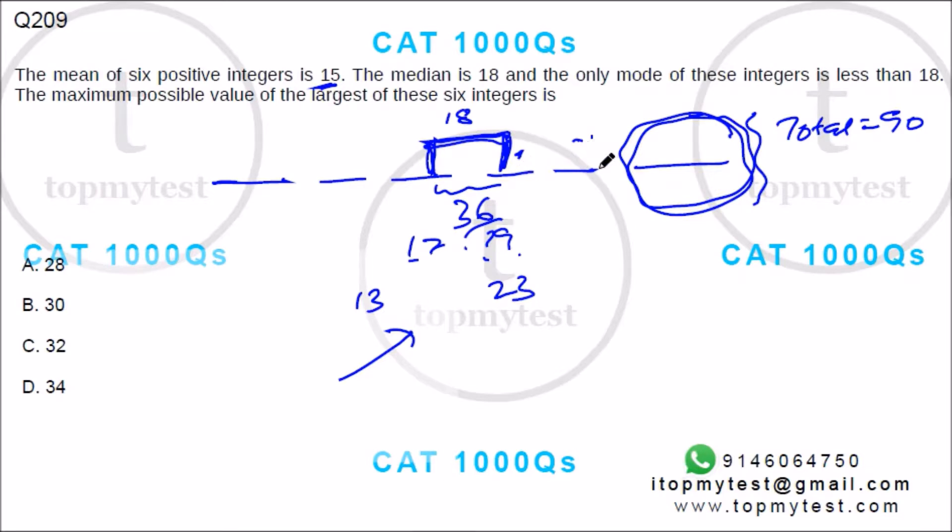I want these two numbers as low as possible so that I can give the rest to the last number. The lowest possible value is 1 and 1 which will also be the mode. And we know the mode is less than 18.